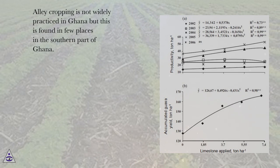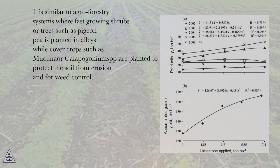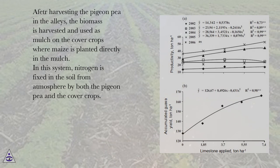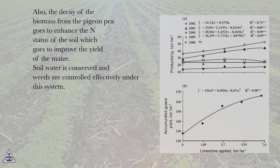Alley cropping is not widely practiced in Ghana but is found in a few places in the southern part. It is similar to agroforestry systems where fast-growing shrubs or trees such as pigeon pea are planted in alleys, while cover crops such as mucuna or calipogonium are planted to protect the soil from erosion and for weed control. After harvesting the pigeon pea in the alleys, the biomass is used as mulch where maize is planted directly. In this system, nitrogen is fixed in the soil from the atmosphere by both the pigeon pea and the cover crops, and the decay of biomass enhances the nutrient status of the soil, improving maize yields. Soil water is conserved and weeds are controlled effectively under this system.